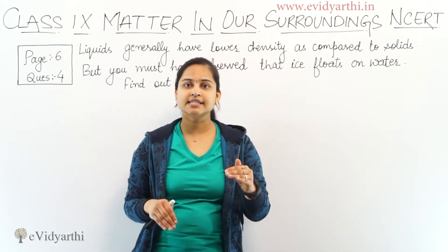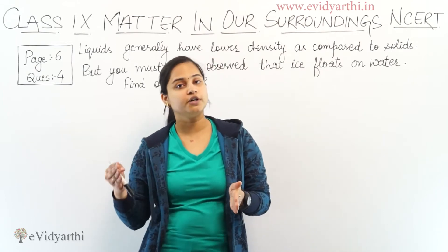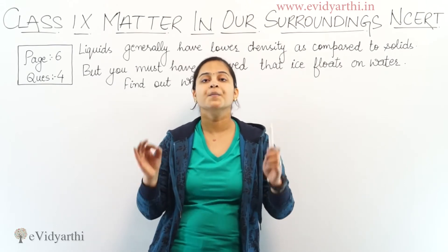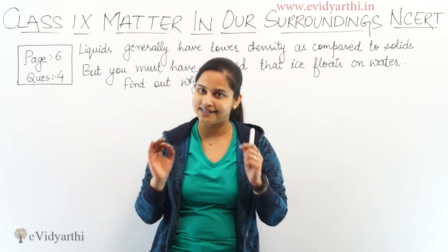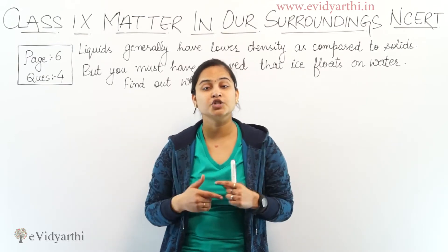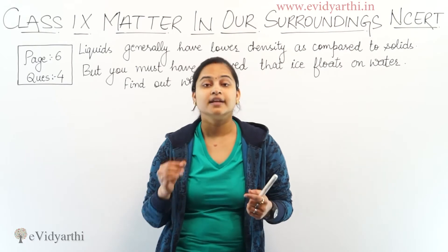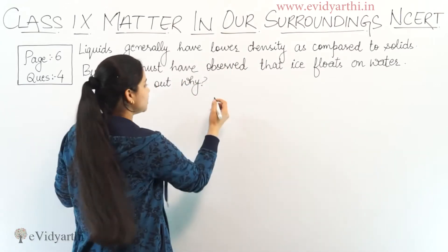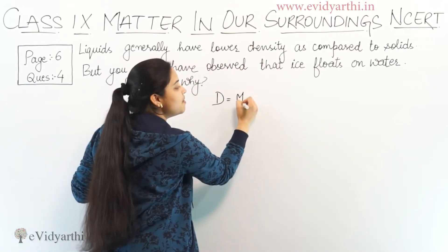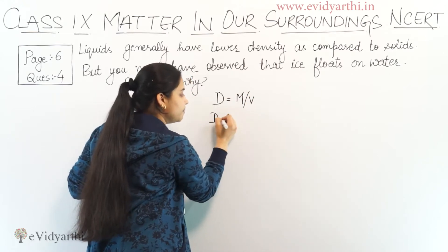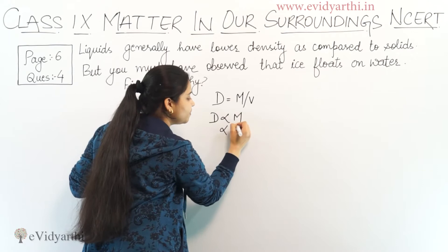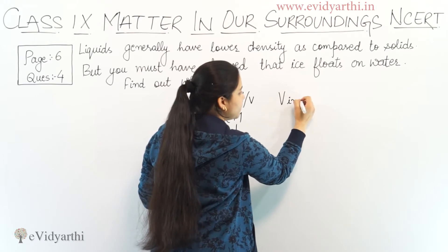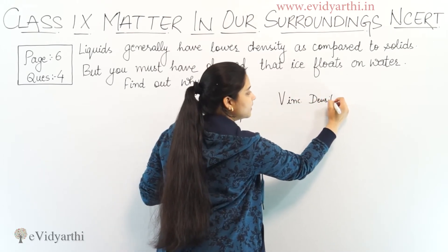So, what is the volume of ice? The volume of ice is greater than that of water. What is density? Mass per unit volume is called density — the ratio of mass to its volume. Density equals mass divided by volume. Mass is directly proportional to density and volume is inversely proportional, meaning that if volume increases, density will decrease.